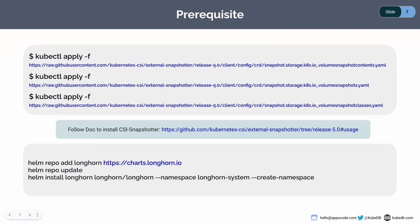We also need a CSI driver which supports volume snapshot. For our demo, we have used Longhorn, which has a CSI driver that supports the volume snapshot feature. But in most cases, cloud providers by default have CSI drivers that support volume snapshots. For example, if you're on an AWS EKS cluster or a GKE cluster, the CSI driver by default supports snapshot operations, so we don't need a third-party CSI driver.